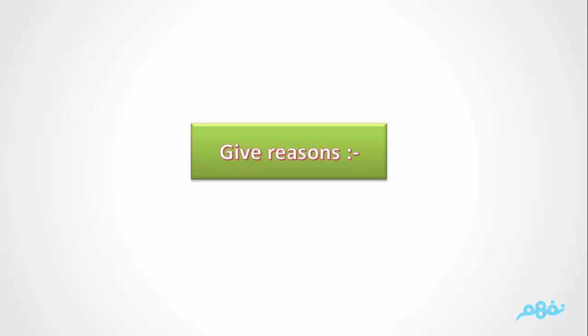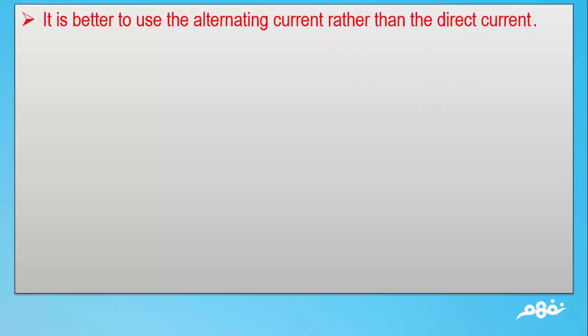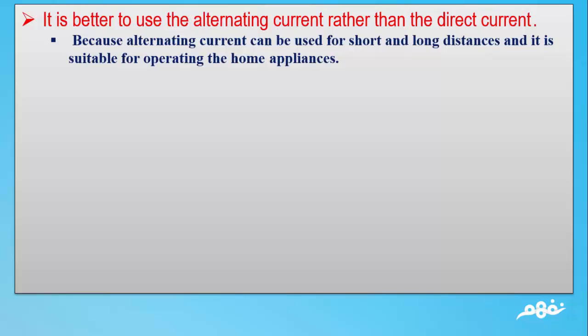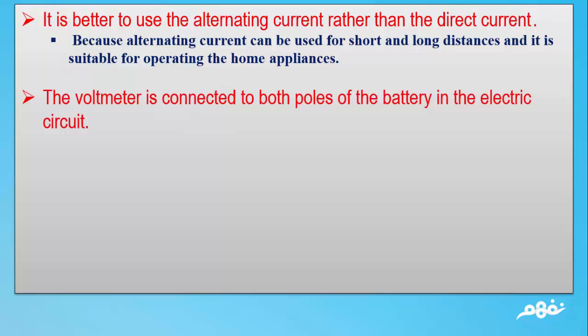Question 1: Give reasons. Number 1: It is better to use the alternating current rather than the direct current. The answer: Because alternating current can be used for short and long distances and it is suitable for operating the home appliances. Number 2: The voltmeter is connected to both poles of the battery in the electric circuit. The answer: To measure the electromotive force.